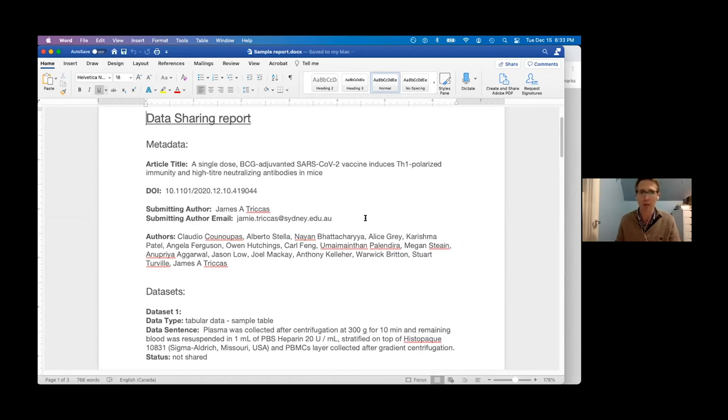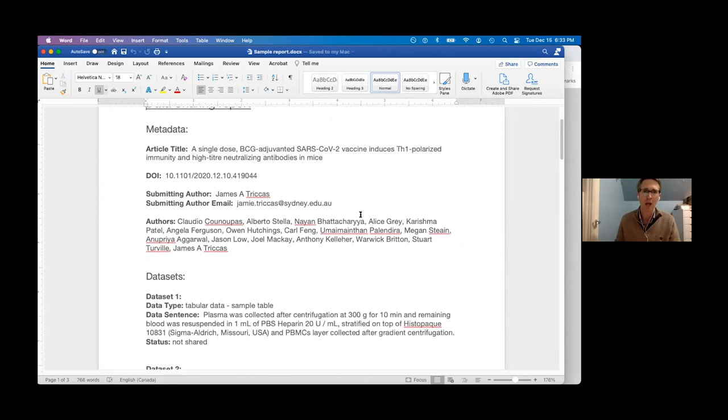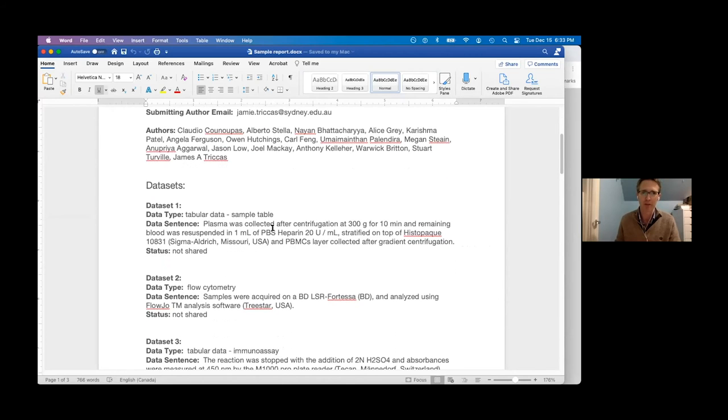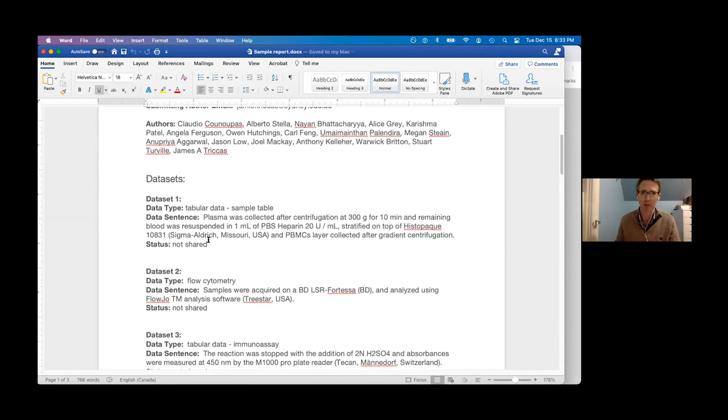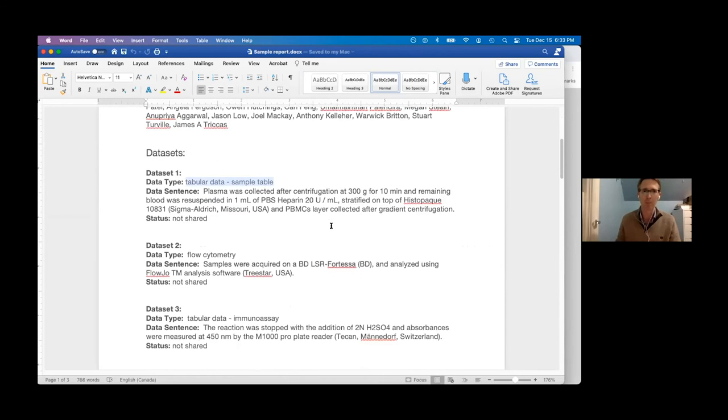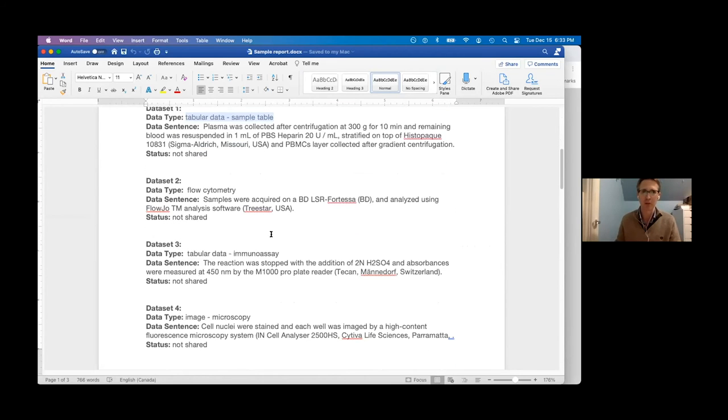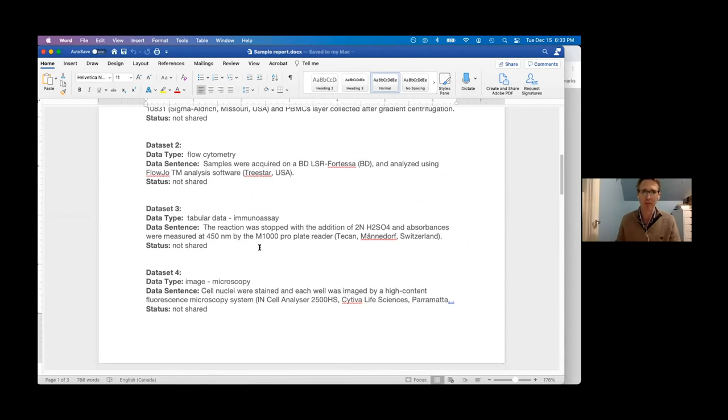So here's the data sharing report for that article. And so we've spotted the datasets they have. There's plasma data being collected. We spotted saying, telling them it's a sample table. There's flow cytometry dataset. Here's your immunoassay. Here's your microscopy.